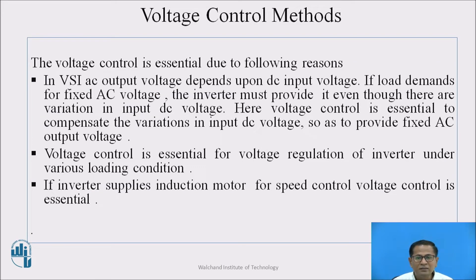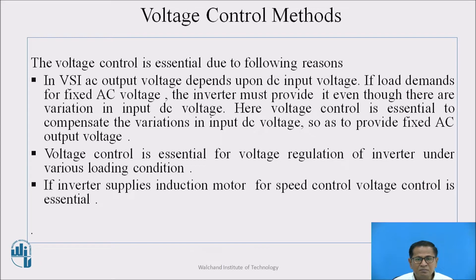Why is voltage control essential? In a voltage source inverter, the AC output voltage depends upon the DC input voltage. If the load demands a fixed AC voltage, the inverter must provide it even though there are variations in the input DC voltage. Voltage control is essential to compensate these variations so as to provide fixed AC output voltage.